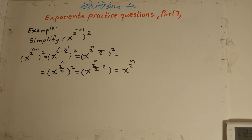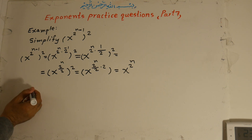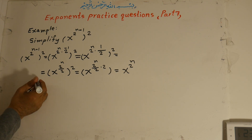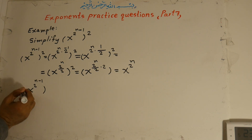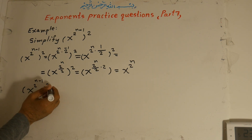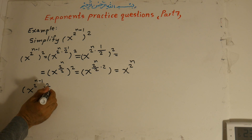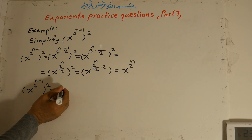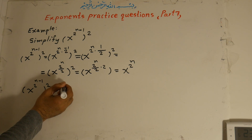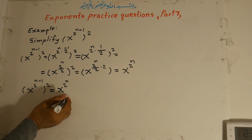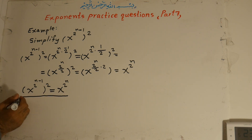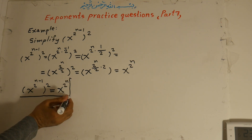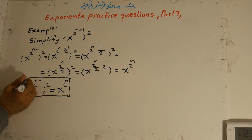In fact, after simplification, x to the power of 2, all to the exponent of n minus 1, all to the power of 2, becomes equal to x to the power of 2 to the exponent of n. This is the answer for the question.